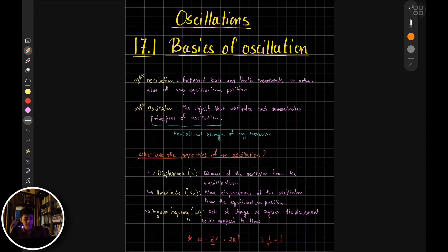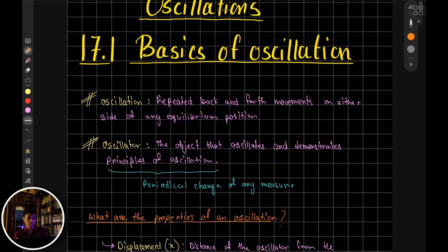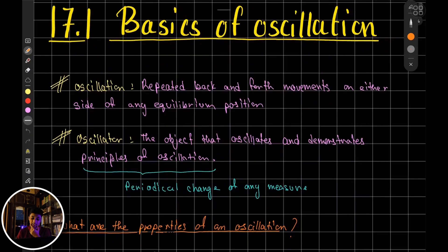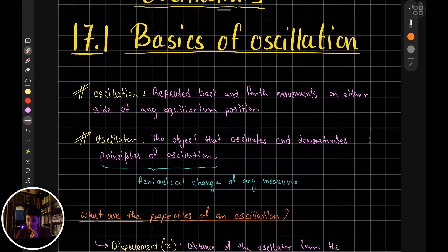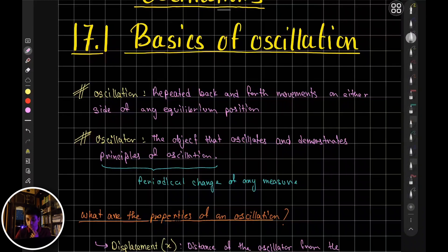Let's start with a few definitions. Oscillation is basically the repeated movement of any object from side to side with respect to the equilibrium. For example, if you have a bob drawn here, equilibrium is the point right in the middle.